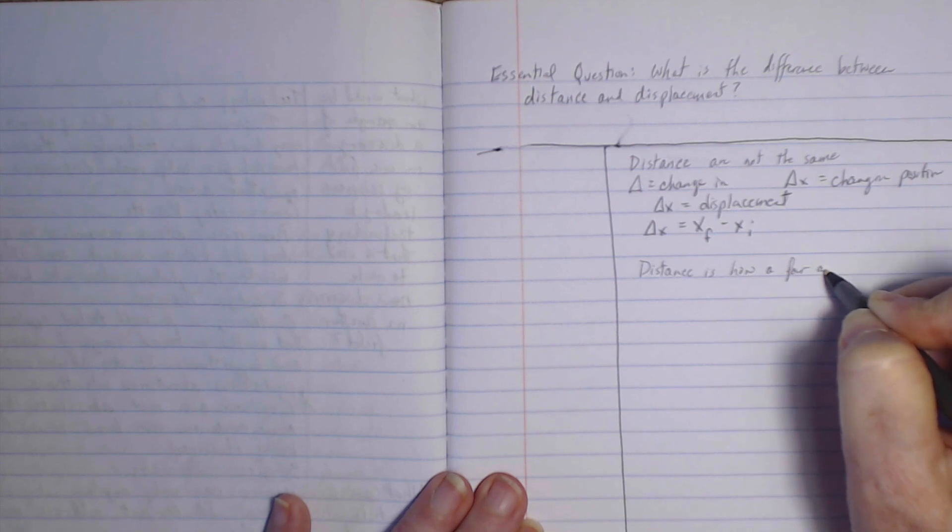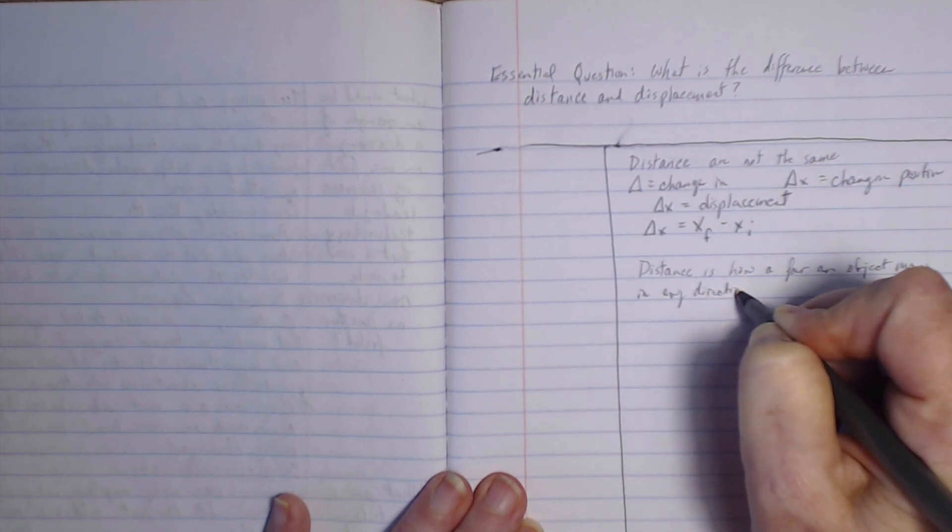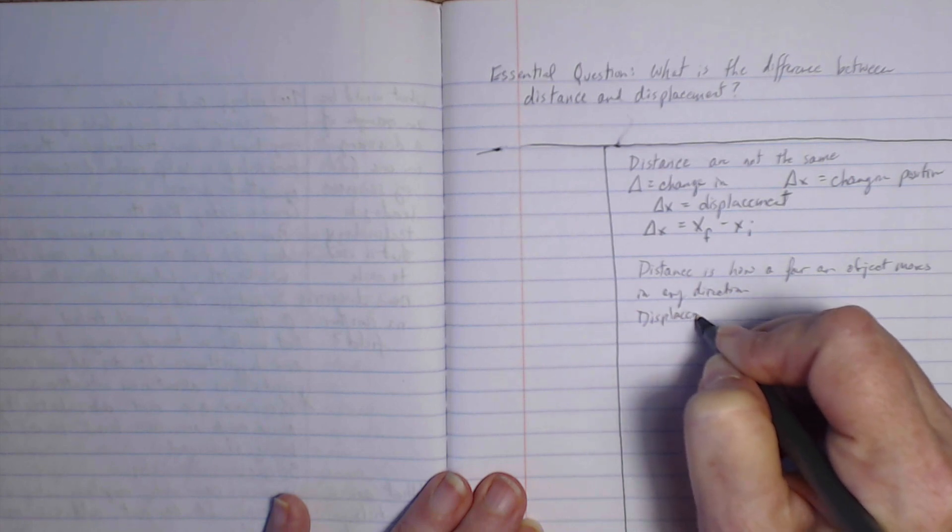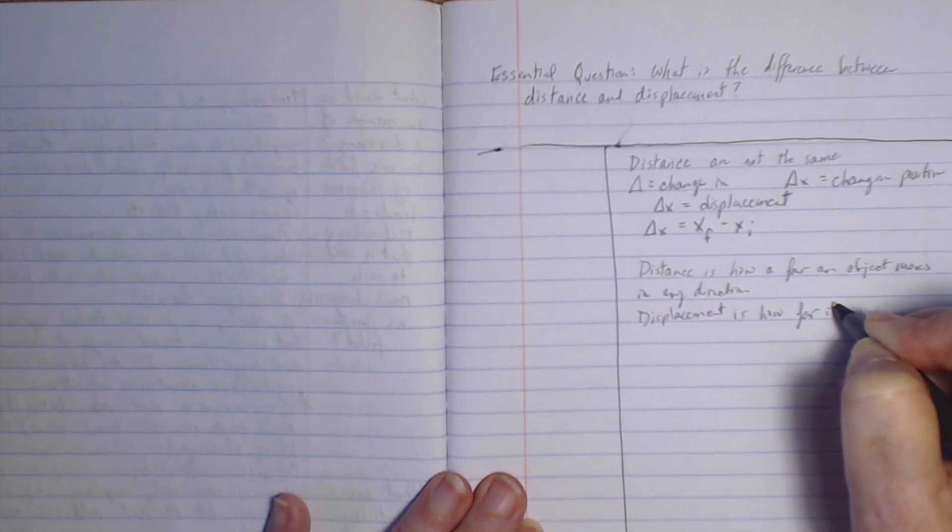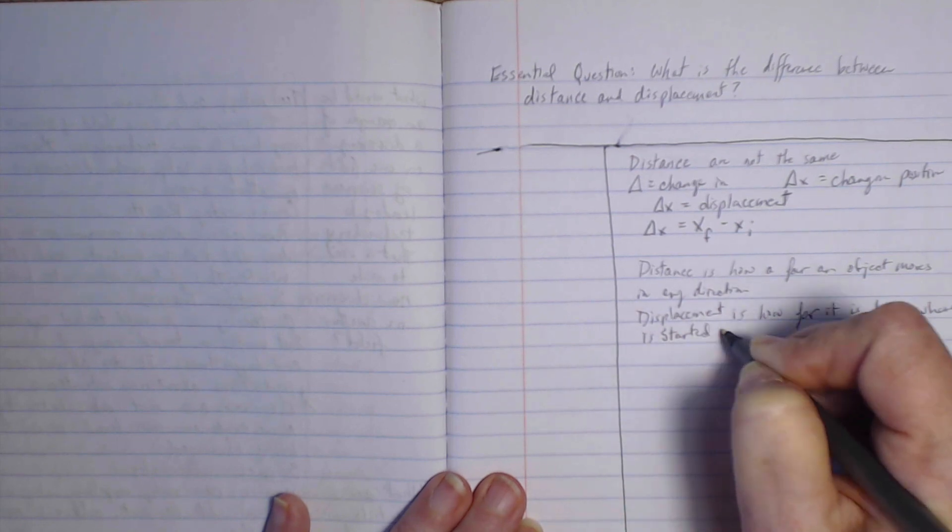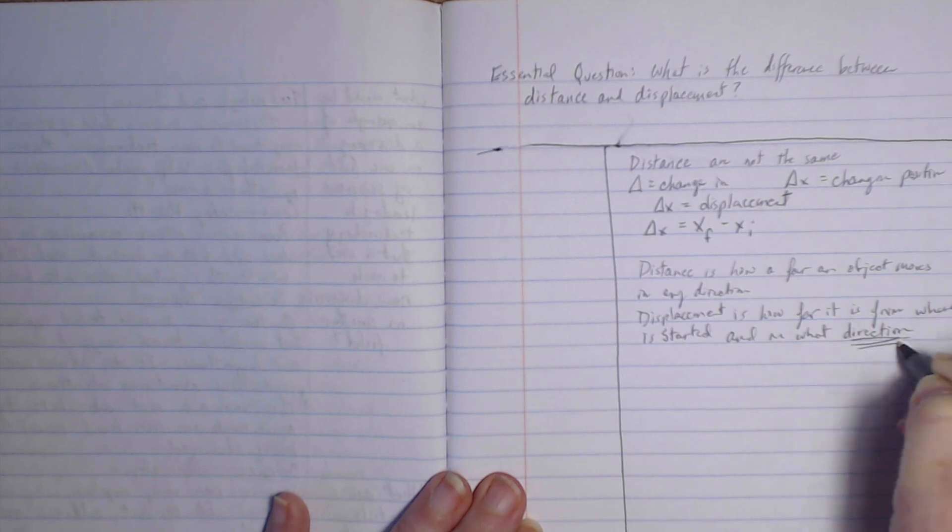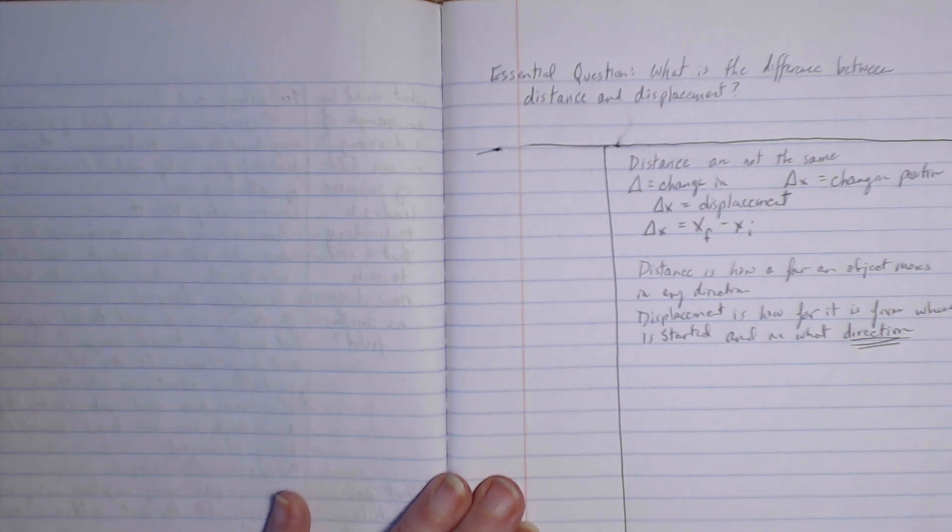Distance is how far an object moves in any direction. Displacement is how far an object moves from where it started and in what direction. Direction is going to be very important.